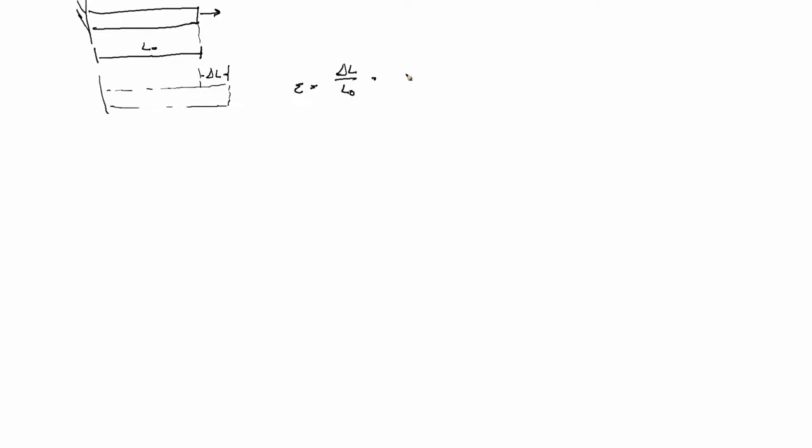So another way we write this is the current length. Delta L is the current length minus the original length over L0.